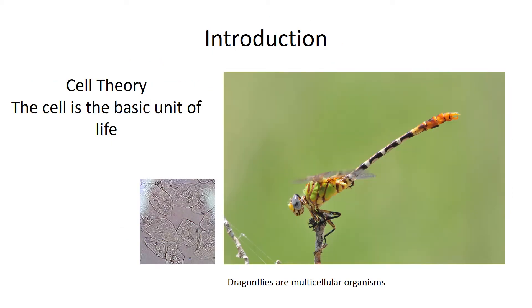So even when we look at a dragonfly, which is a multicellular animal, it is made up of lots of different types of cells. Over time, we developed something called cell theory, and cell theory basically states that cells are the basic unit of life.